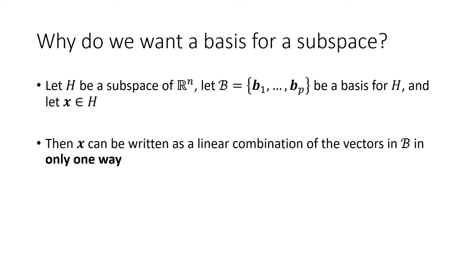But why do we care? Why do we want a basis for a subspace? One of the primary reasons is that if we have a vector in that subspace, it turns out we can write that vector as a linear combination of the basis vectors in exactly one way. There's only one way to do it, and that uniqueness turns out to be very useful.